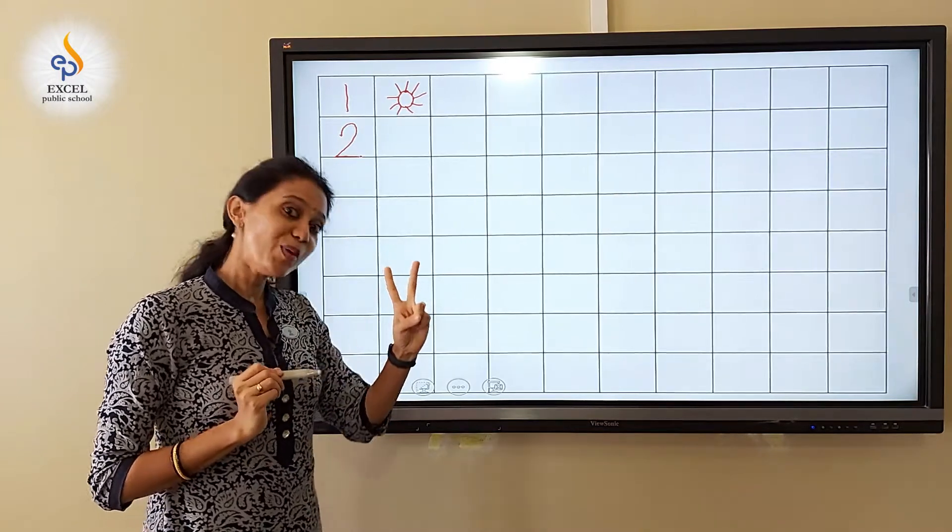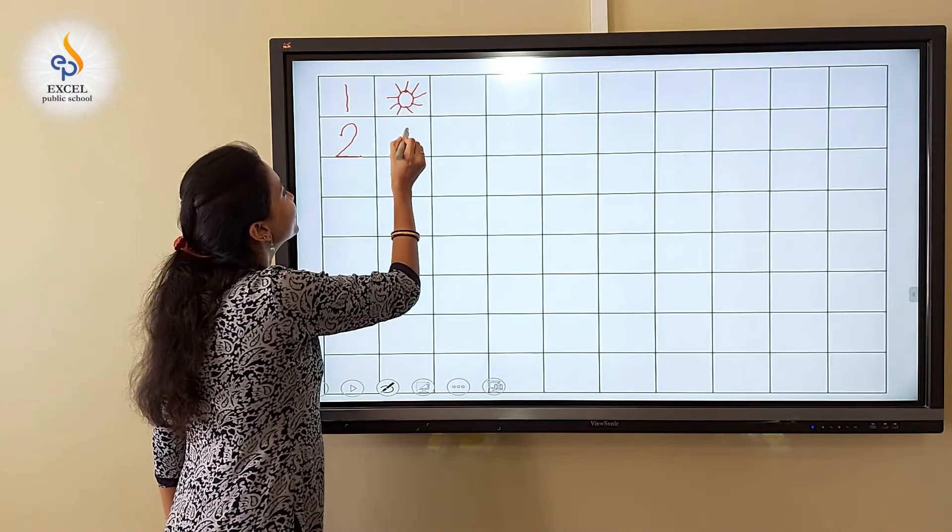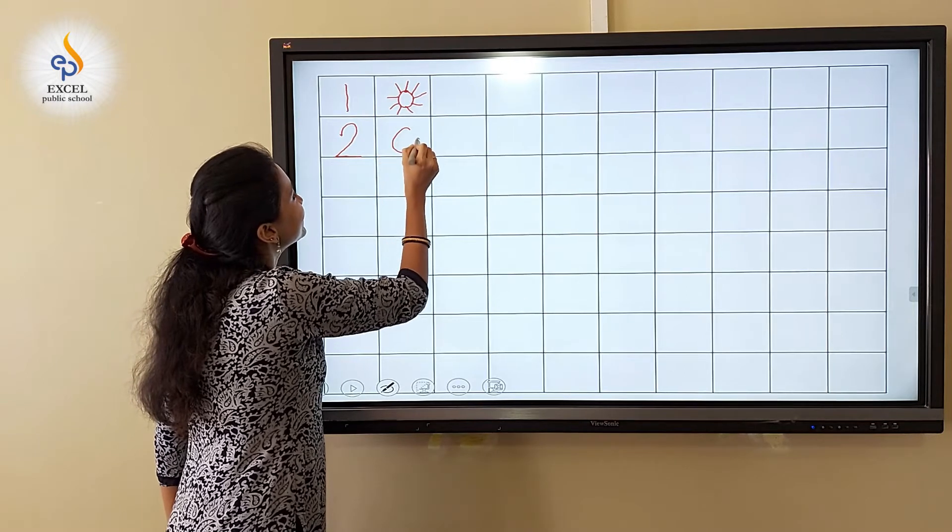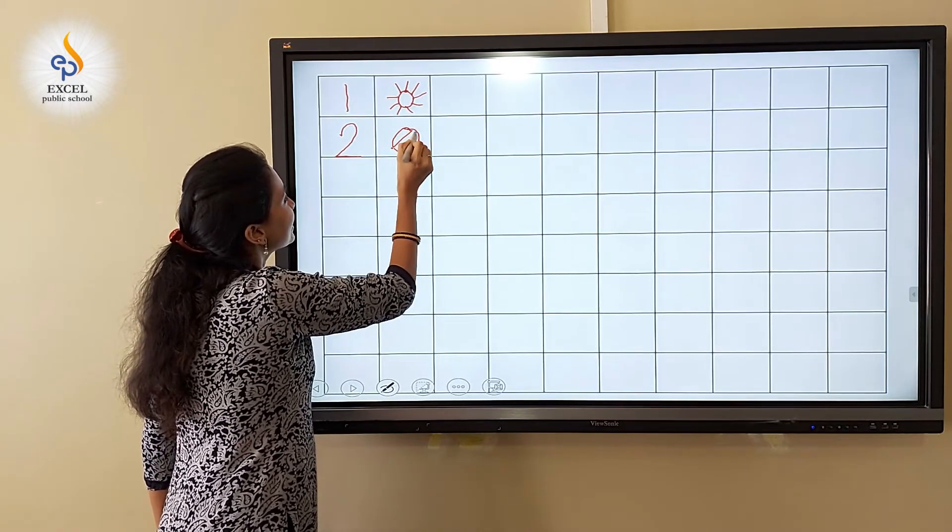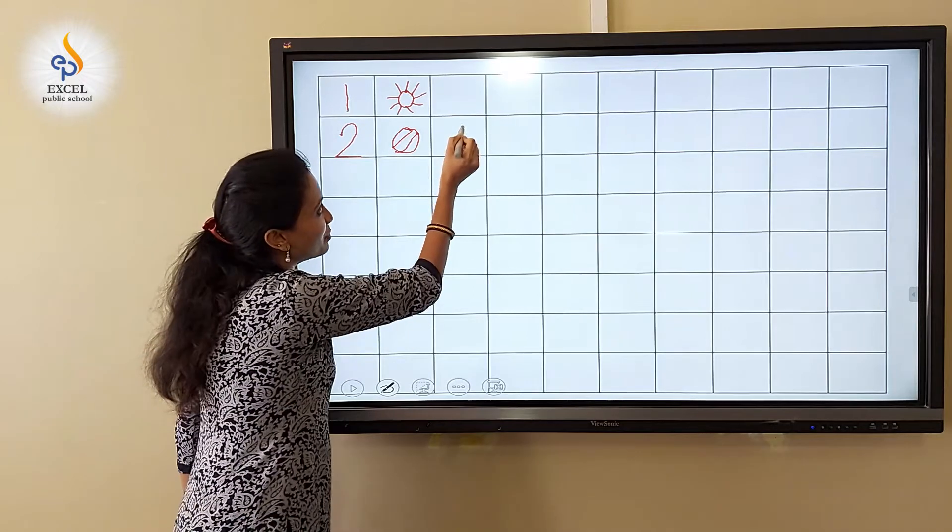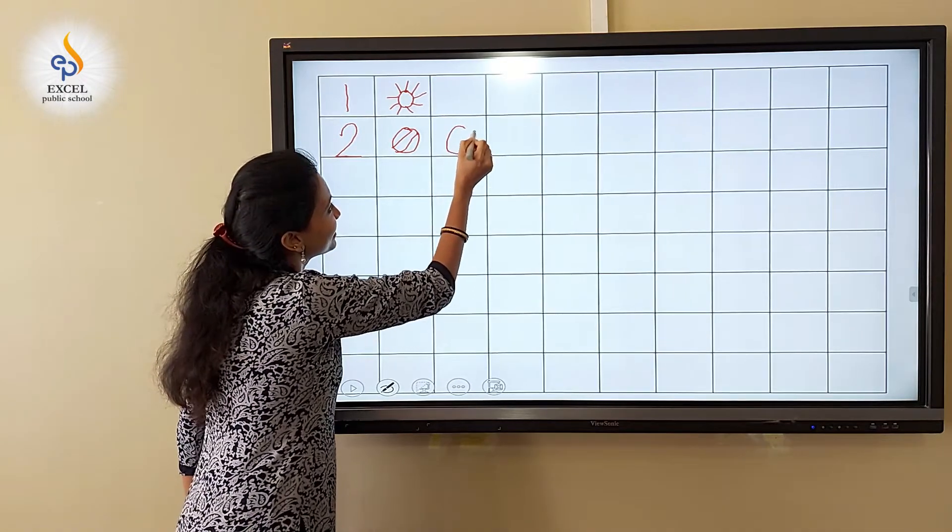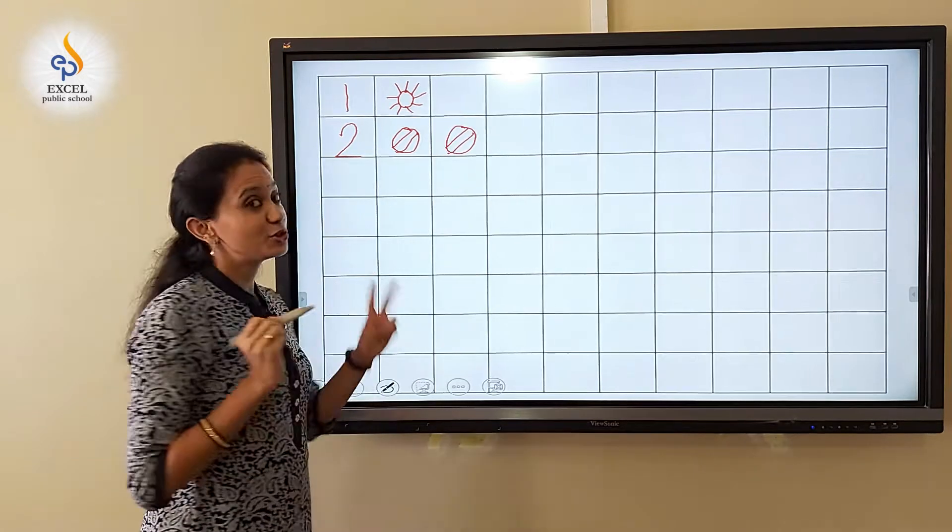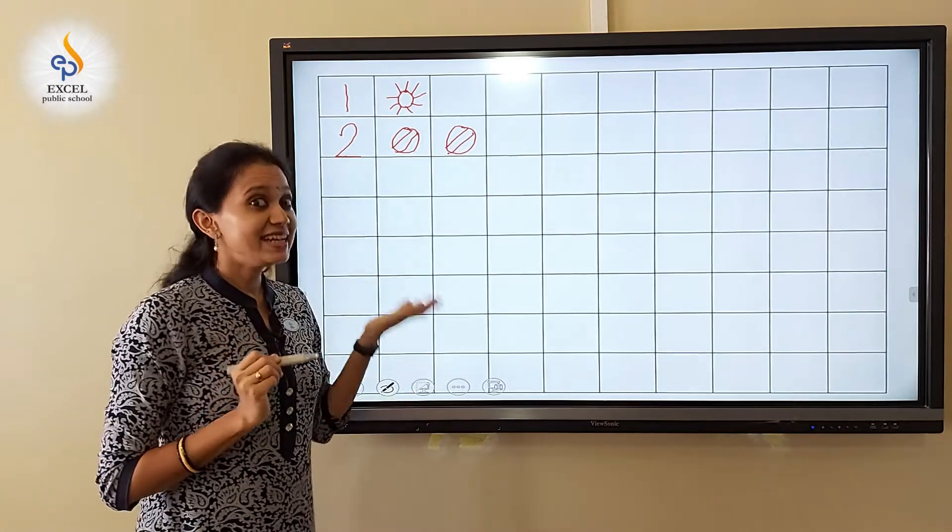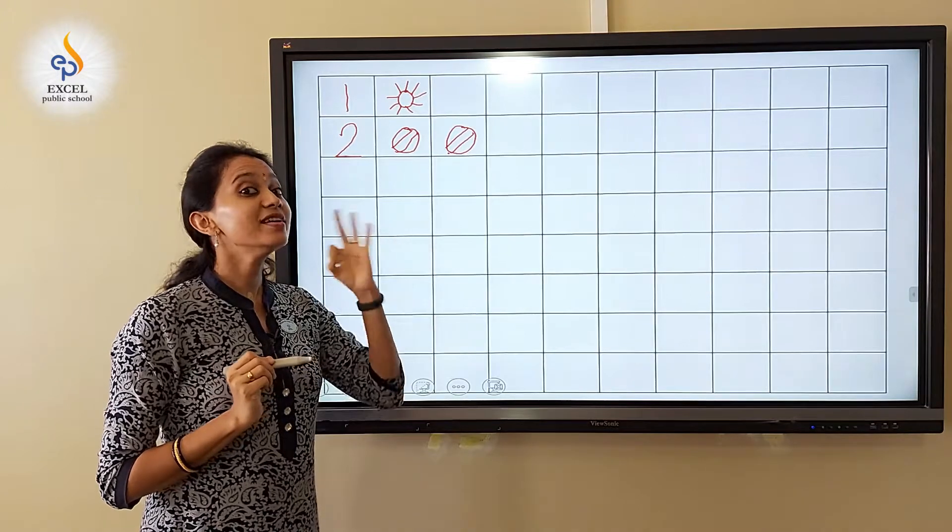We will draw two balls. And then you can draw a slanting line like this. One more. Two balls. The next number is number three.